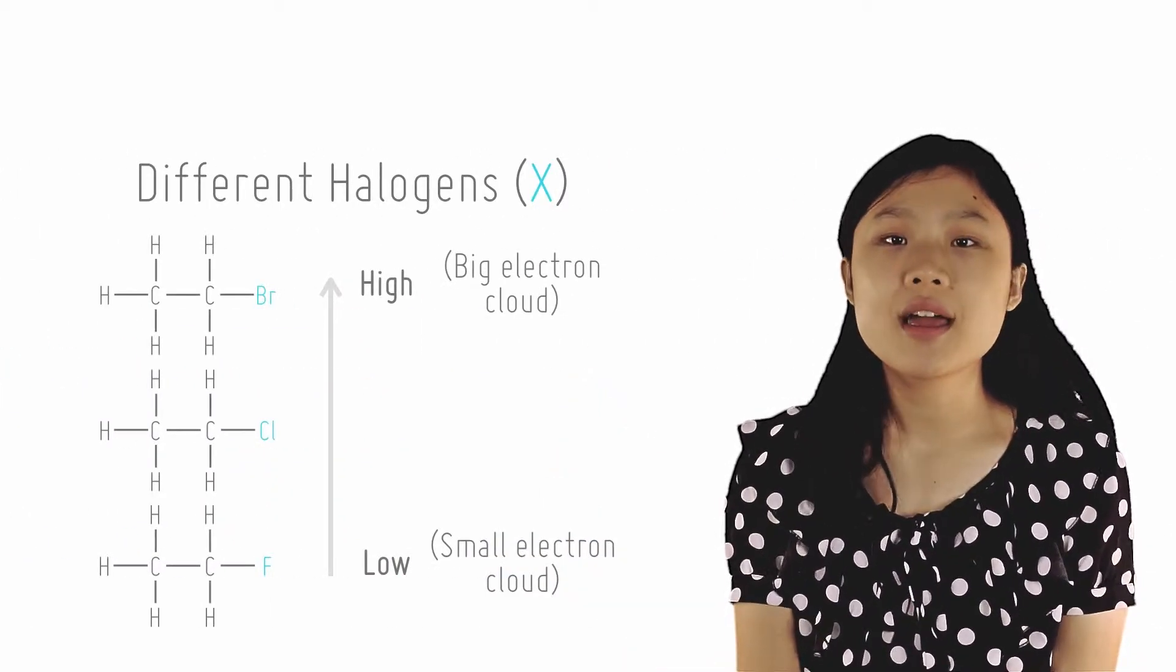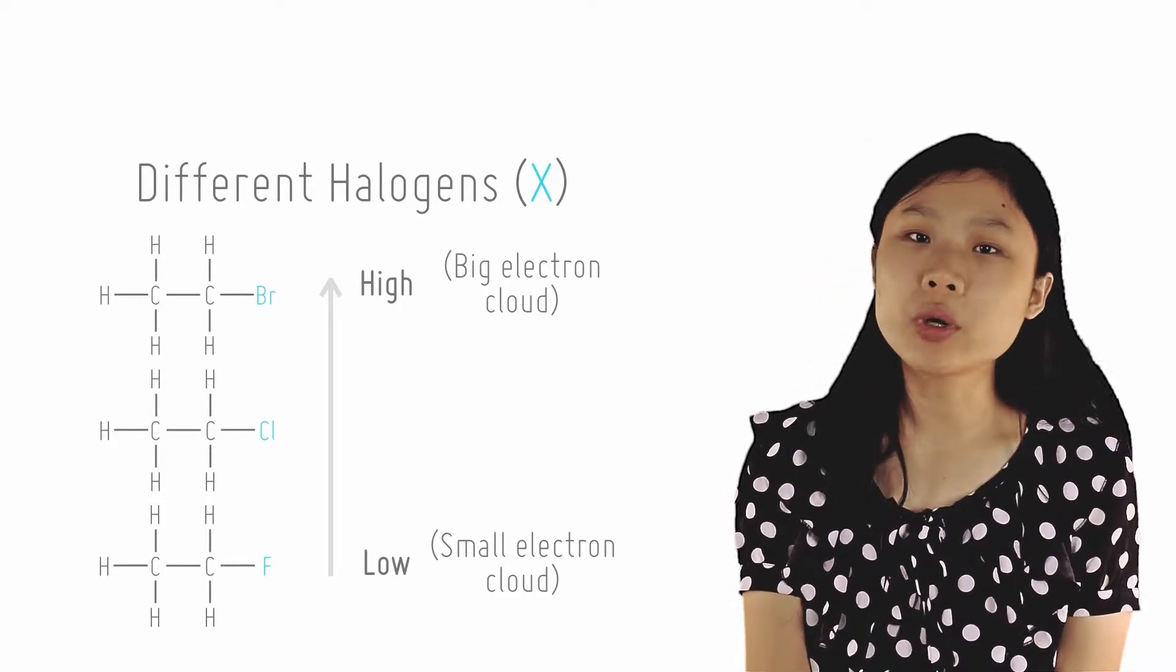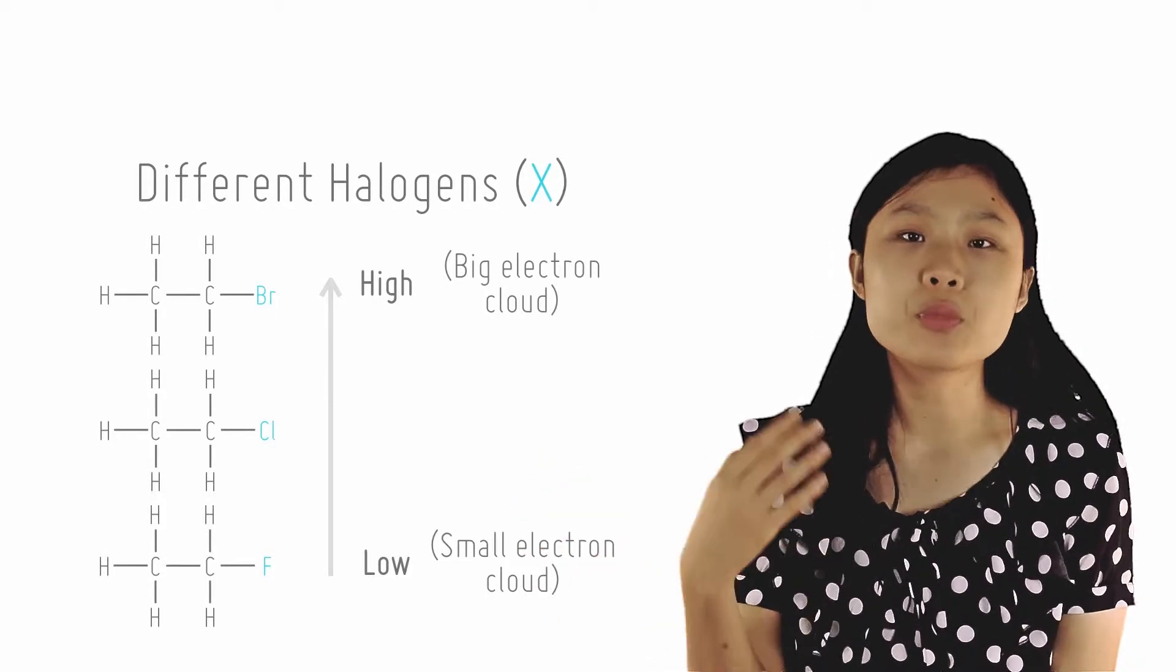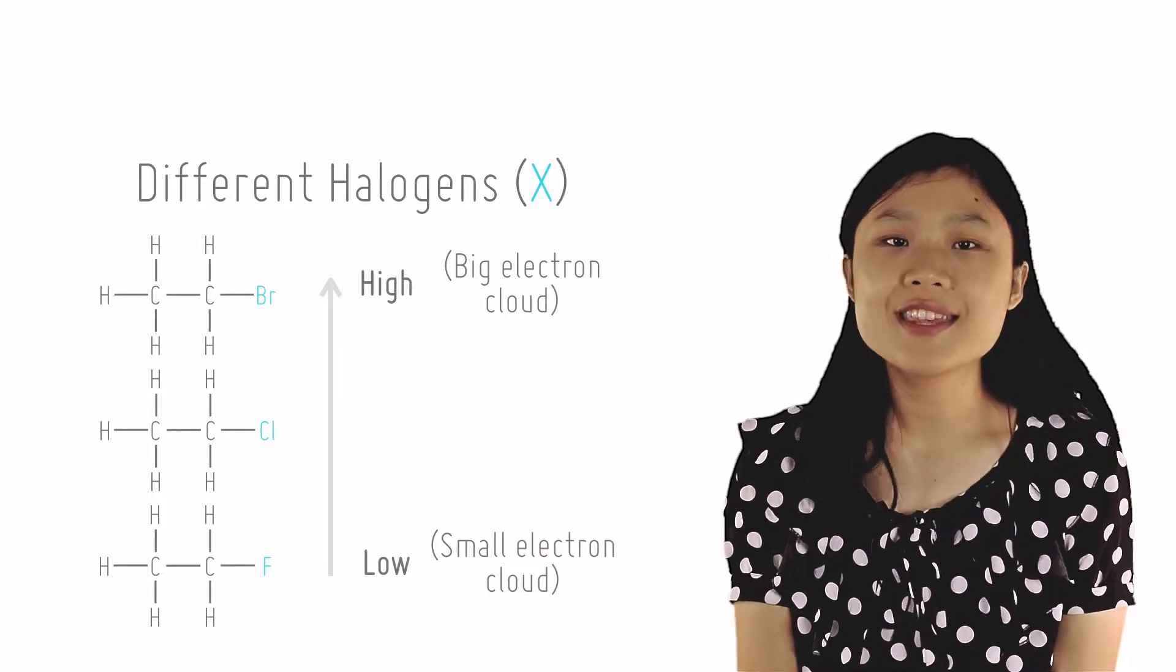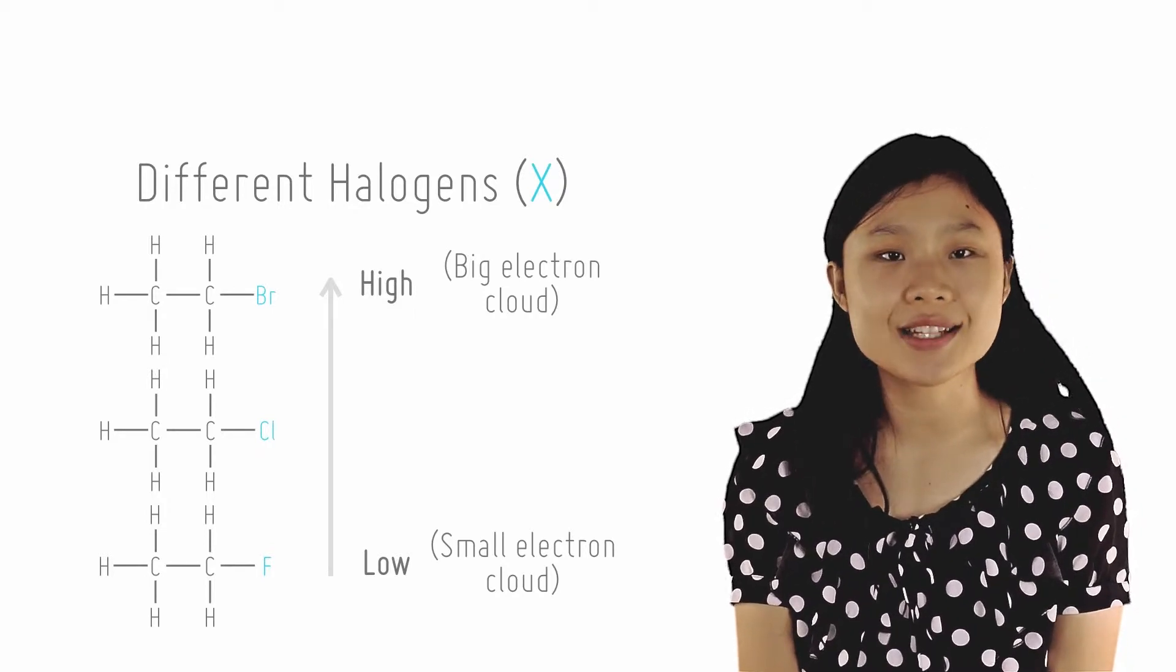the boiling point increases with increasing atomic size of the halogen attached, going from fluorine compounds with lowest boiling point to chlorine, bromine and iodine. This can be explained by ID-ID interactions which increase with larger electron cloud size of halogen atoms.